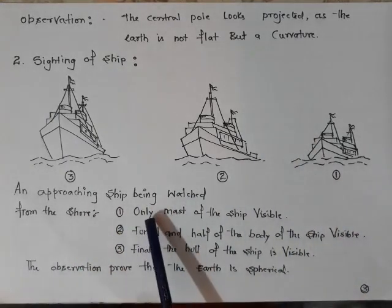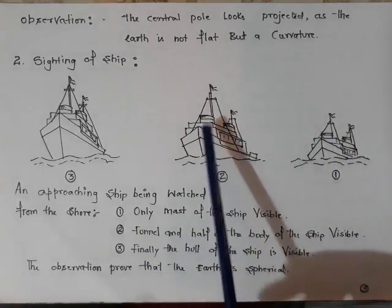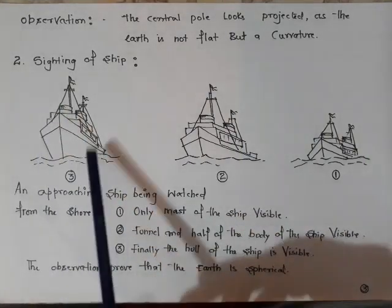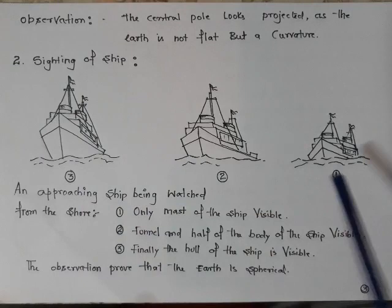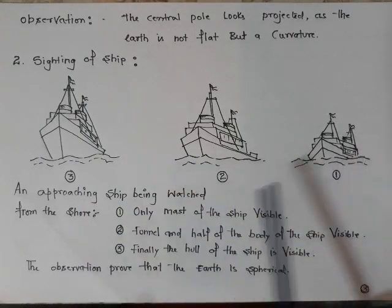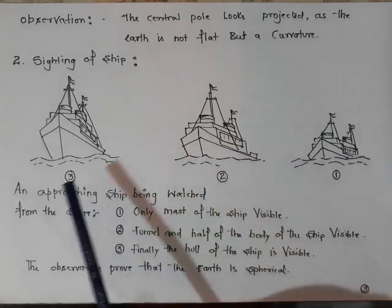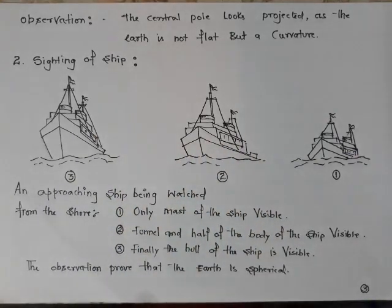First, only the mast of the ship is seen. Then the funnel of the ship is seen, and finally the hull of the ship is seen. Or you can also conclude that the ship is partially seen, and as it comes near to the shore, it is fully seen. This happens only when there is a curvature and the ship is moving along a curvature, proving that the earth is spherical in shape.